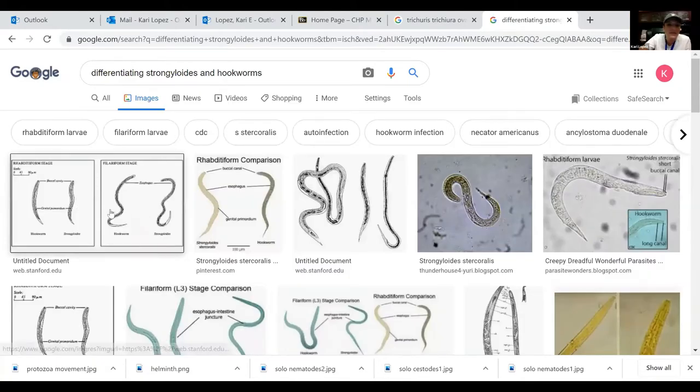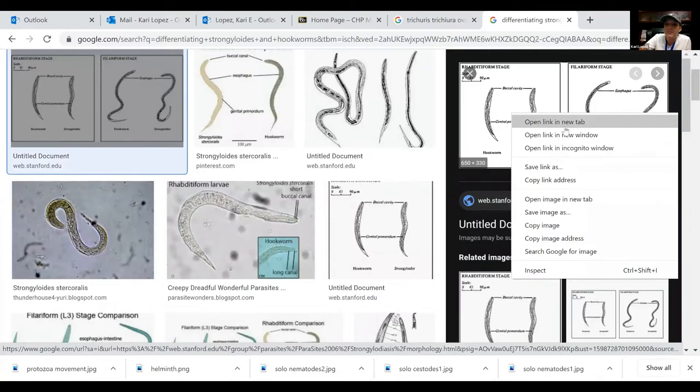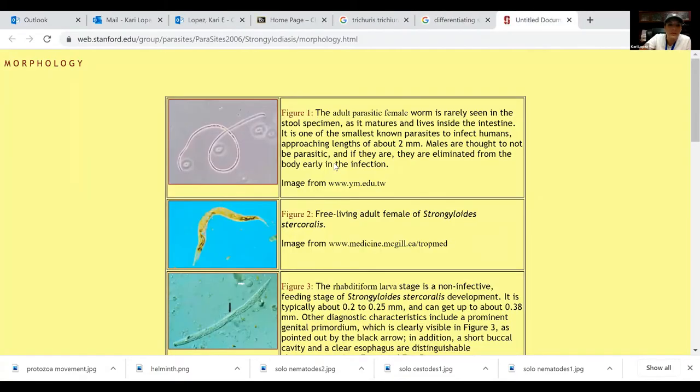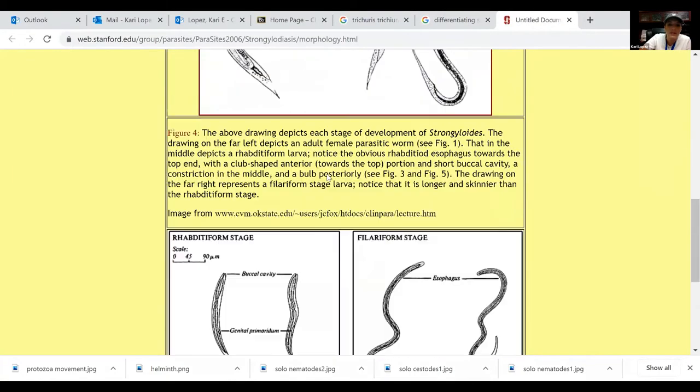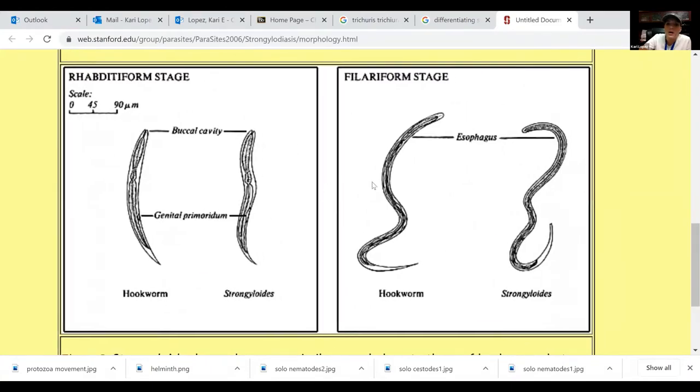Yep there they are, that sure made it easy didn't it. Okay so I'll do the hookworm first. So here's your hookworm and your hookworm has a long buccal cavity. Oh I'm on the filariform, here we go. Here's your rhabditiform stage. Your hookworm has a long buccal cavity. And then your strongoloides has a short buccal cavity, but it has the prominent genital primordium.